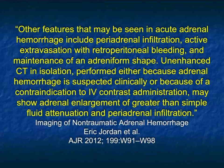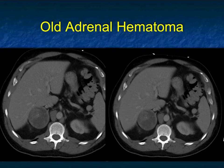The first case showed periadrenal infiltration, which is common. In the last case, the adrenal shape was maintained but with high density — so there is a spectrum. When you see a lot of changes around the gland, it means the capsule has typically disrupted, the bleed is more extensive, and the patient typically presents with more acute symptoms.